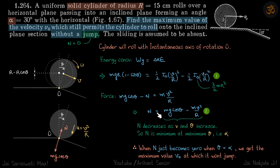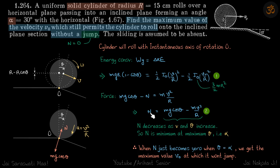From N = mg·cosθ - mv²/r, we see that N decreases if theta increases and also if v increases. So N is minimum at the maximum value of theta. By geometry, if the bend angle is alpha, the maximum angle the cylinder can turn is also alpha. Therefore, N is minimum when theta equals alpha, and we get the maximum value of v₀ at which the cylinder won't jump.